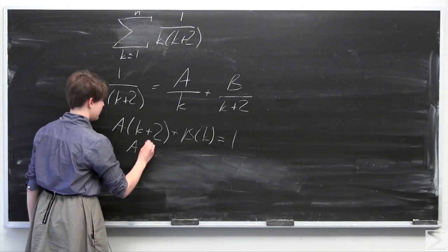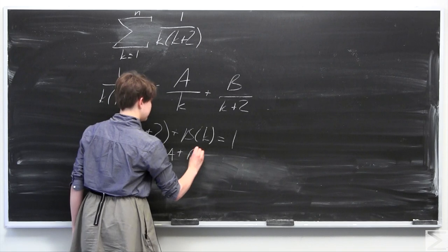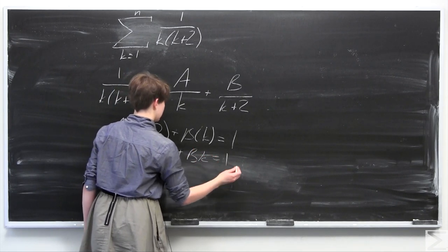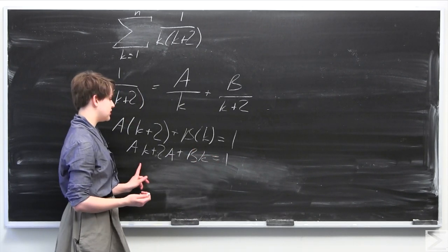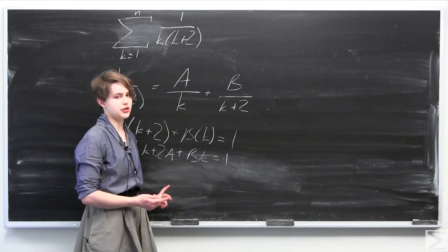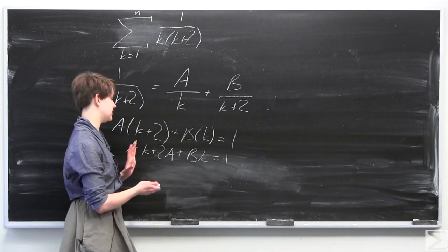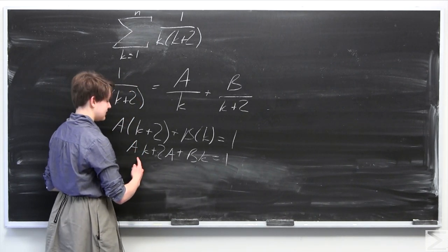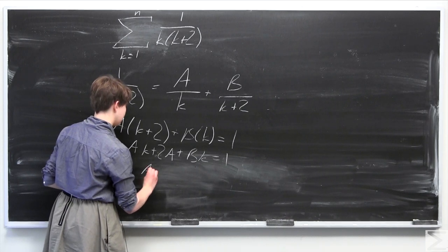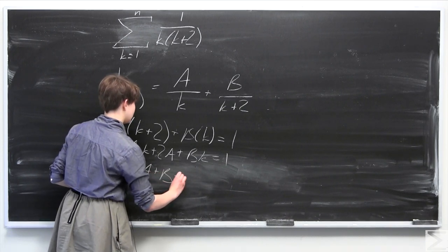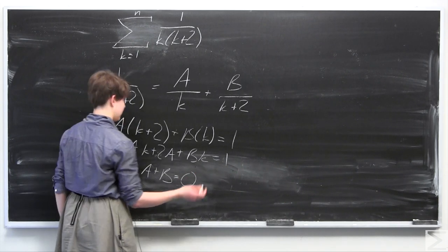Distributing out a, we have ak plus 2a plus bk equals 1. Grouping by powers of k and comparing coefficients: the coefficient of k gives a plus b equals 0, since there is no k term on the right-hand side.